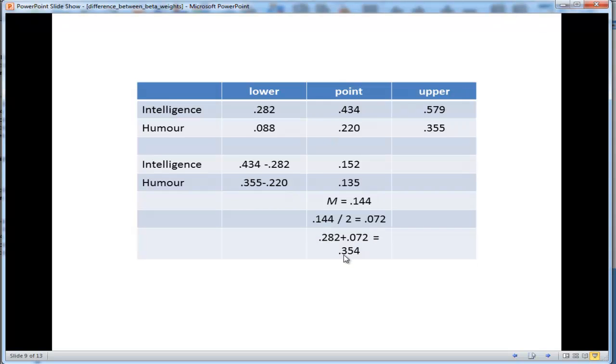Then I added it to 0.282. Bear with me here. I'll show you in a graph what I'm doing, which should clarify things. 0.282 plus half of the distance of the confidence intervals which are overlapping. So 0.282 plus 0.072 equals 0.354.